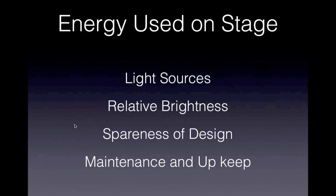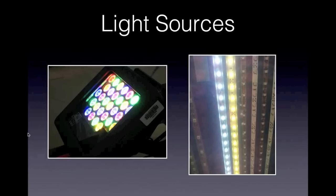I focus on energy used on stage in four ways: the light sources you're specifying — which Richard's presentation nailed in terms of assessing what's at your disposal — then design concepts like relative brightness, which we were taught in college but tend to get away from as we work on bigger productions; then a concept I call a spareness of design, using the minimum gear possible to create what you need; and finally, maintenance and upkeep — how do I treat my equipment and how does that affect the sustainability of my light design.